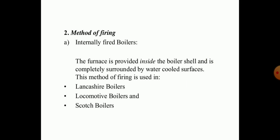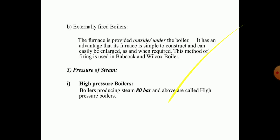By inclined, straight, or circular tube arrangement, combustion is required for heating purposes. Adopting initial methods of boiler firing, boilers are classified according to their method of firing. These include the Lancashire boiler, locomotive boiler, and scotch boiler. Externally fired boilers have a furnace provided outside or under the boiler. An advantage is that the furnace is simple to construct and can be easily enlarged when required. This method of firing is used in the Babcock and Wilcox boiler.